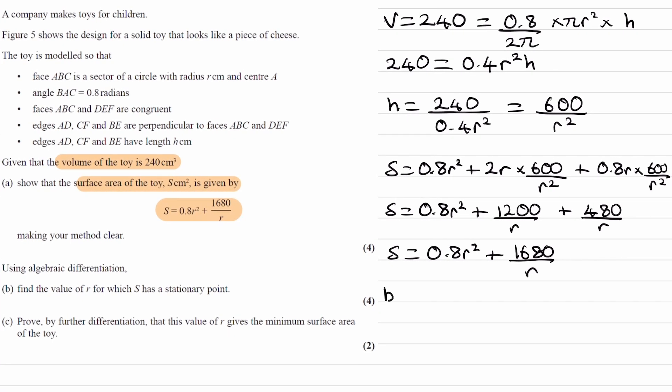And now for part b, we want to use algebraic differentiation to find the value of r for which s has a stationary point. So when s has a stationary point, the differential of s with respect to r will be 0.